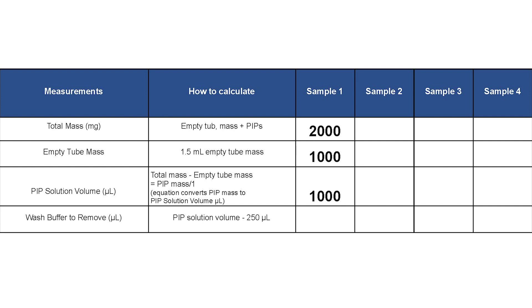Then, subtract 250 microliters from the pip solution volume to calculate the wash buffer to remove. Spin down the sample on a benchtop microcentrifuge to pellet the pips before removing the calculated volume.